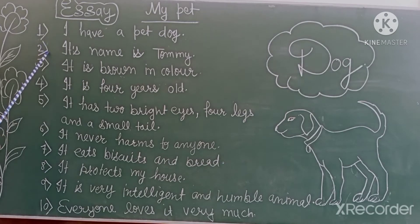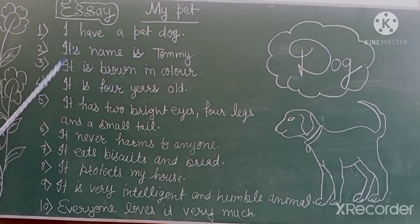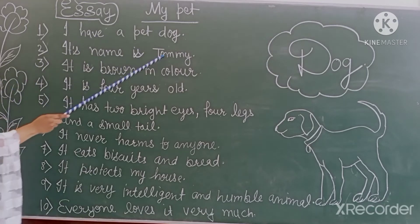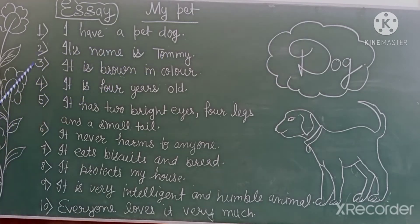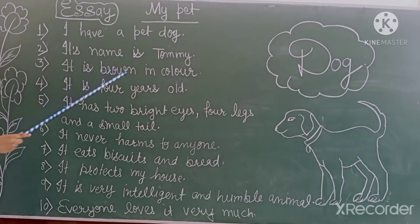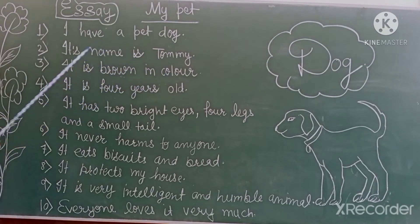Second line is: Its name is Tony. Iska naam kya hai? Tony. Iska naam Tony hai.